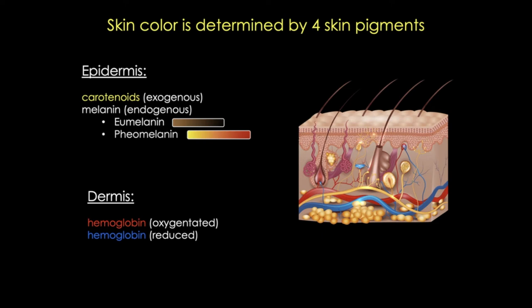If you take a small amount of brown eumelanin in hair—which would otherwise cause blonde hair—and mix it with some red pheomelanin, the result is orange hair, what we call red or ginger hair. Pheomelanin is also present in the skin, so redheads often have a more pinkish hue to their skin as well.